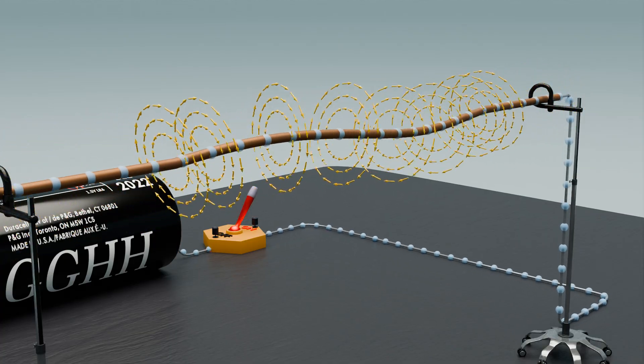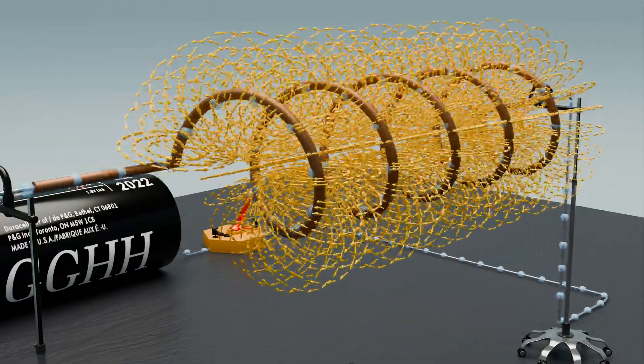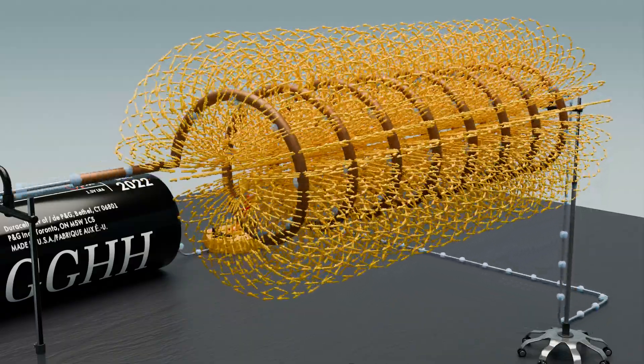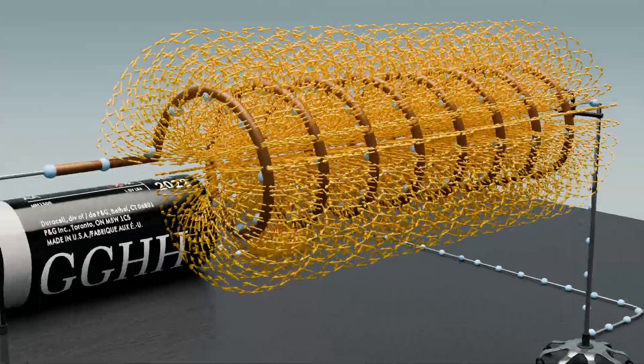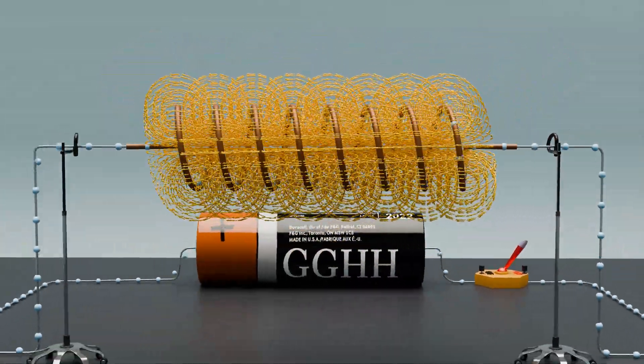But what happens when we take this straight wire and coil it into multiple circular turns, forming an inductor? In an inductor, the magnetic fields generated by each turn of the wire combine, creating a much stronger and more concentrated magnetic field inside the coil.